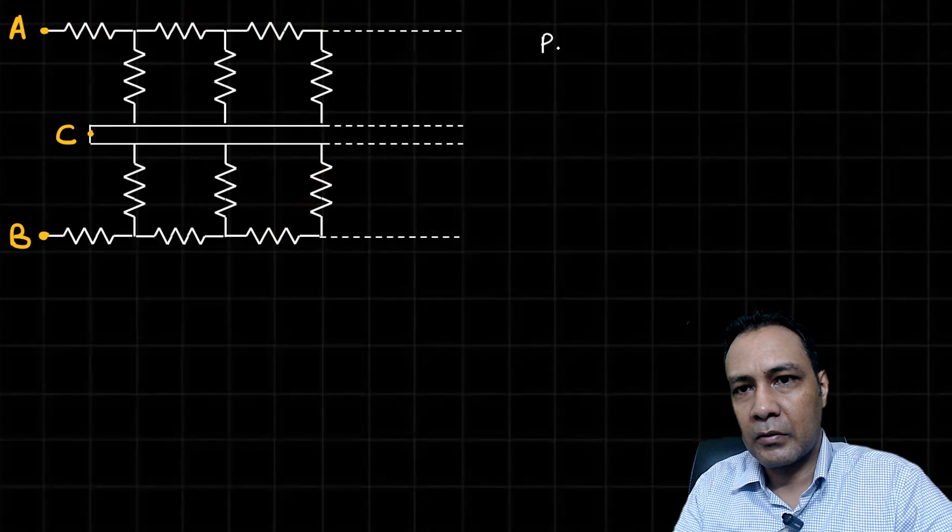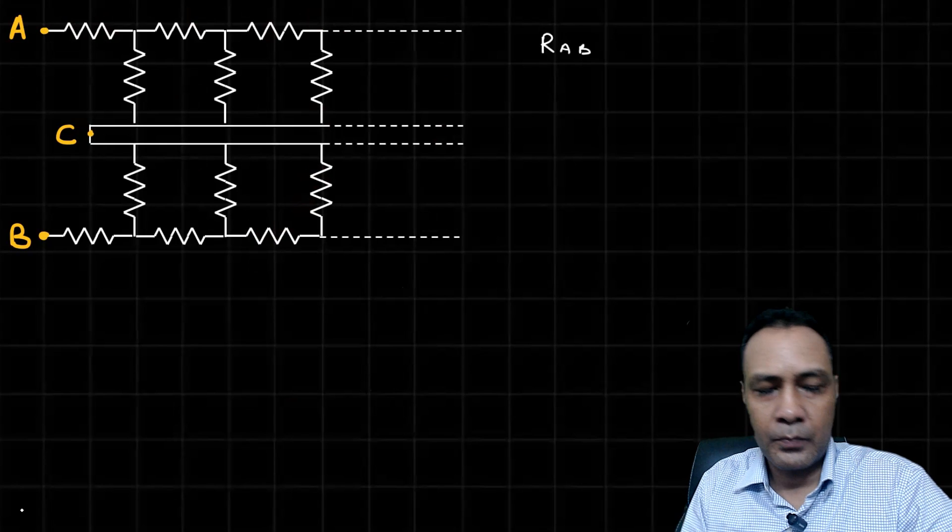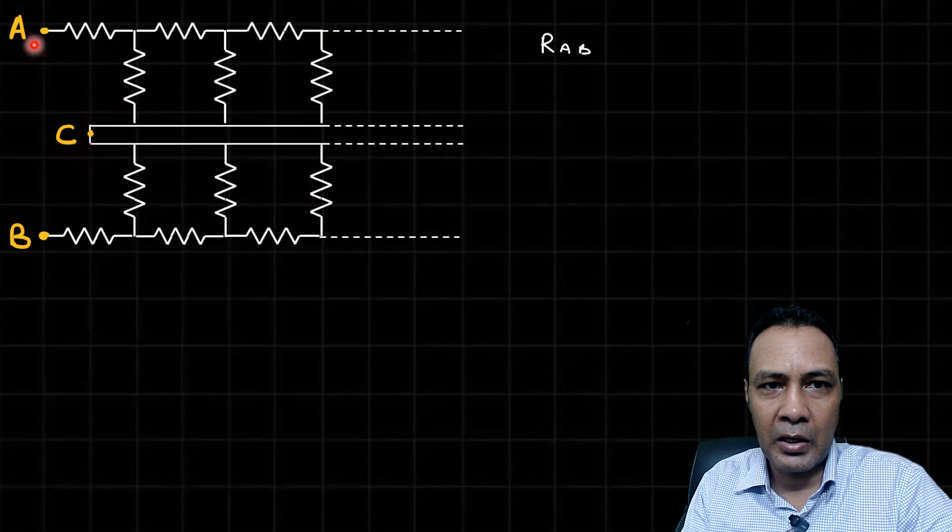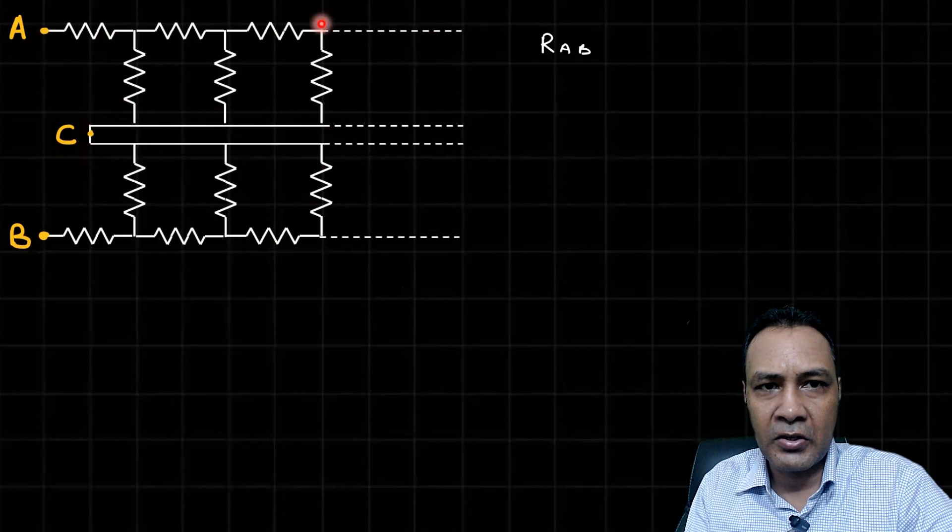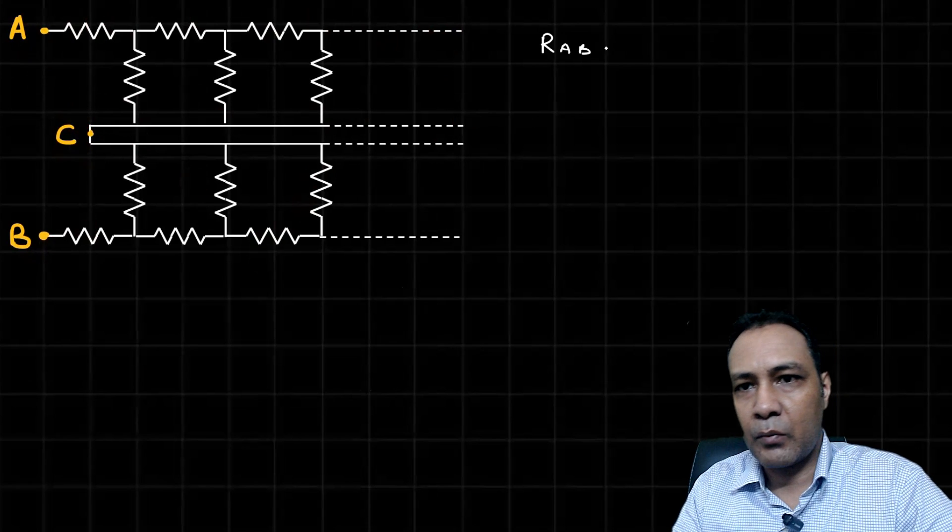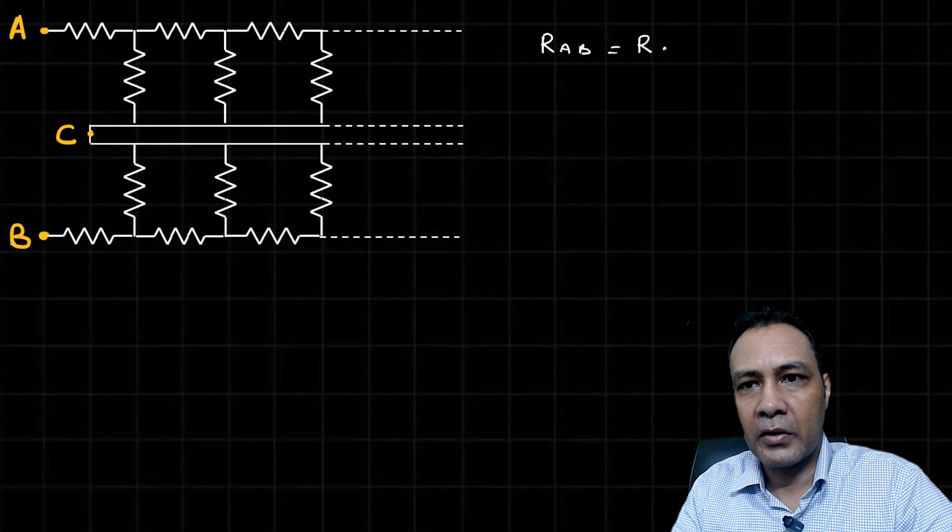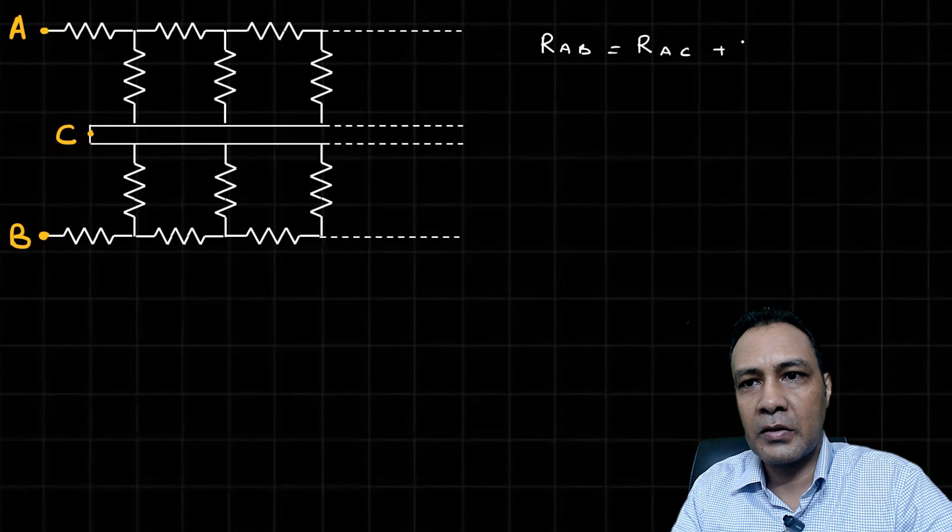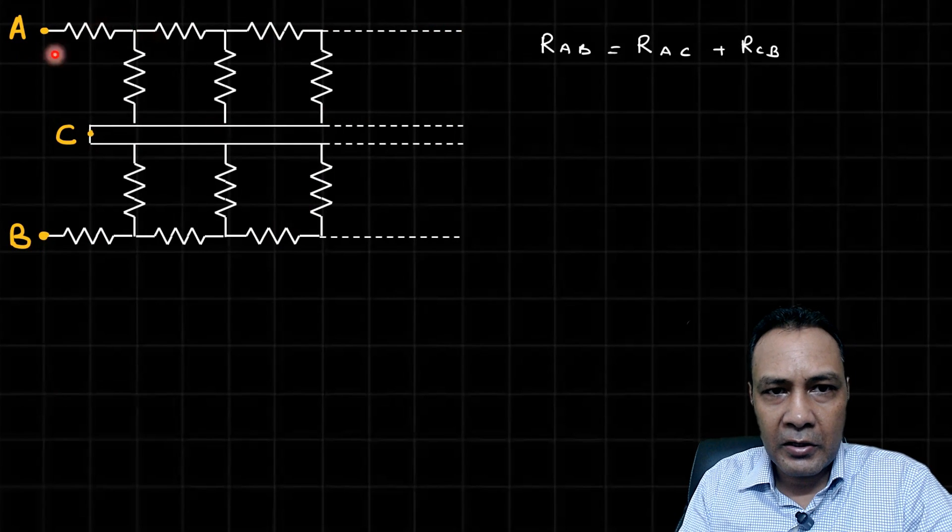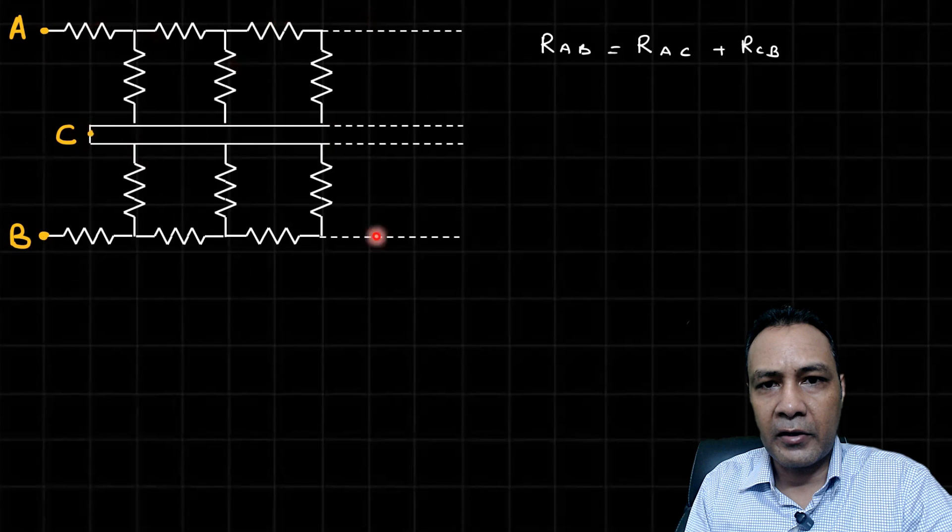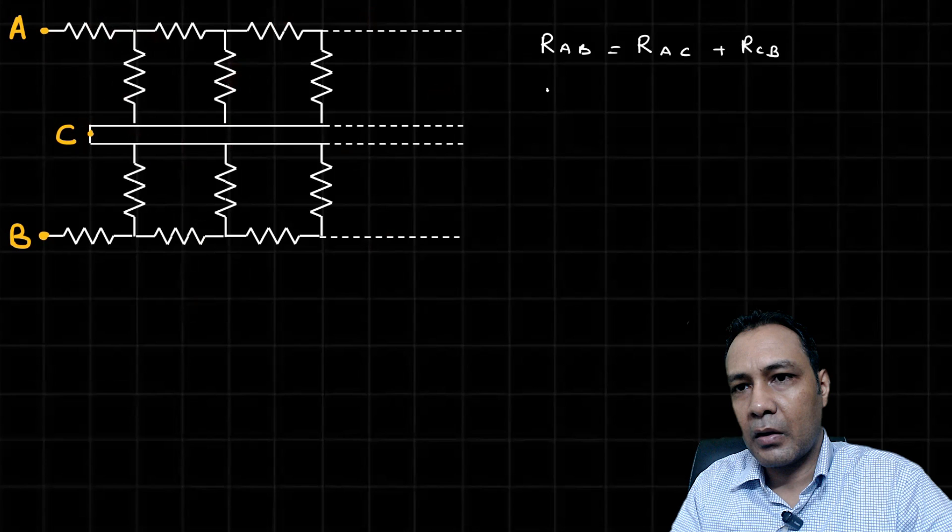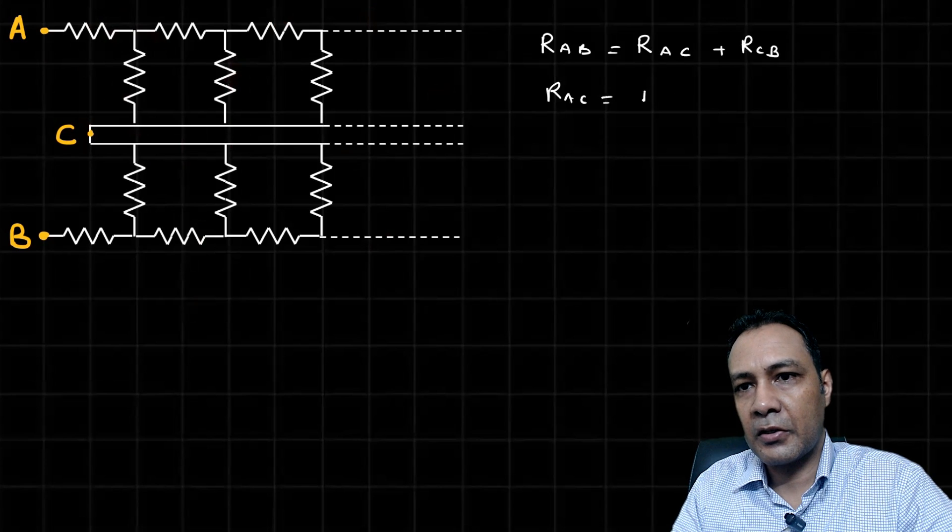R_AB is equal to - these points are at the same potential, I have named that point C - so R_AB is basically the series combination of R_AC and R_CB. So R_AB equals R_AC plus R_CB.